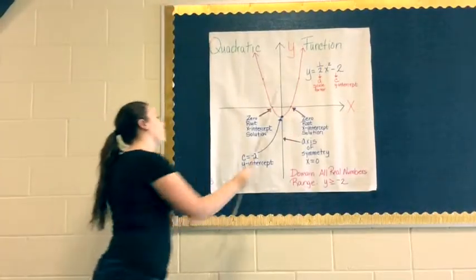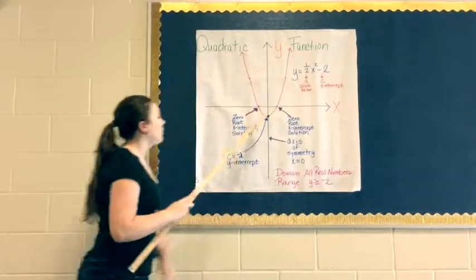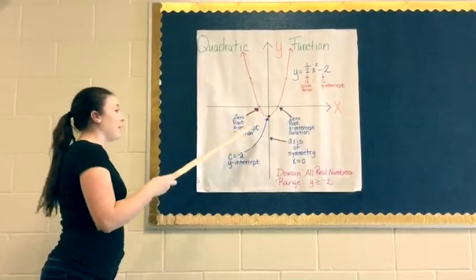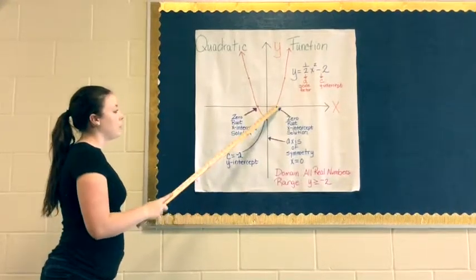As you can see, in the middle is the axis of symmetry, which is zero because that's where it crossed. The zero or root x-intercept solution is negative 2 for this side and then positive 2 for this side.